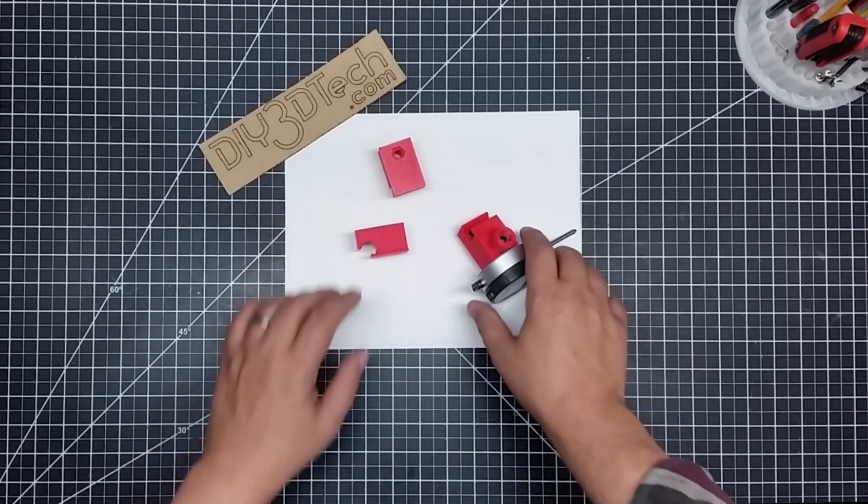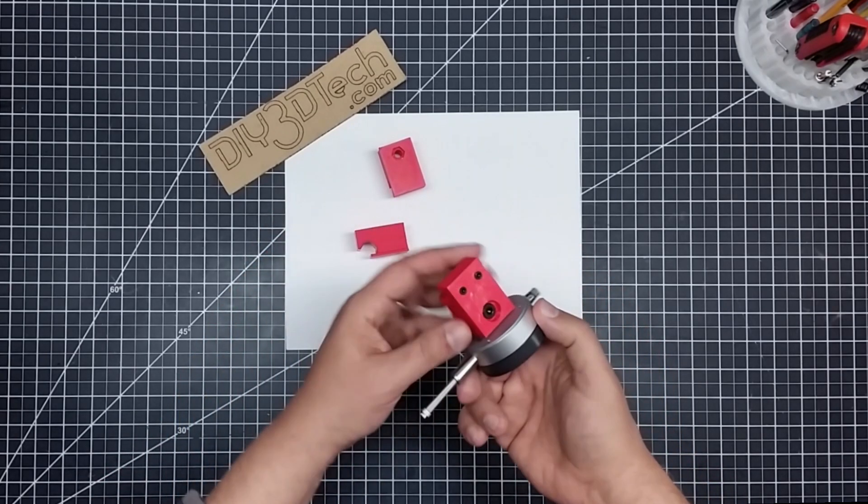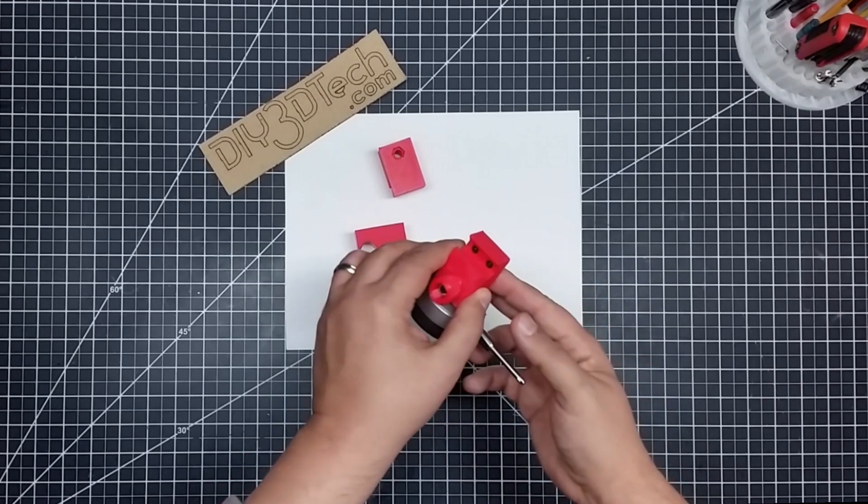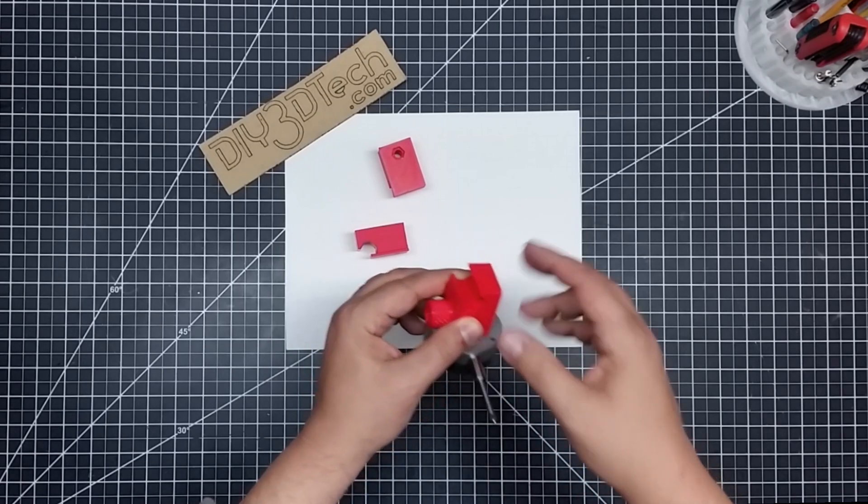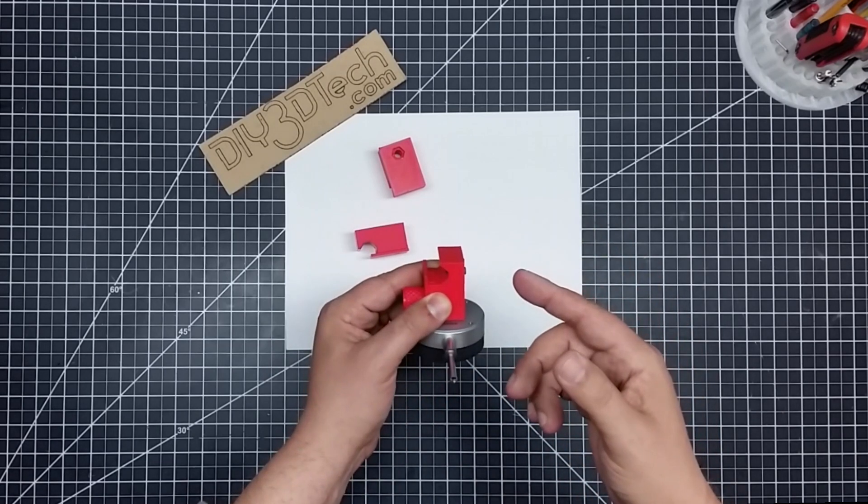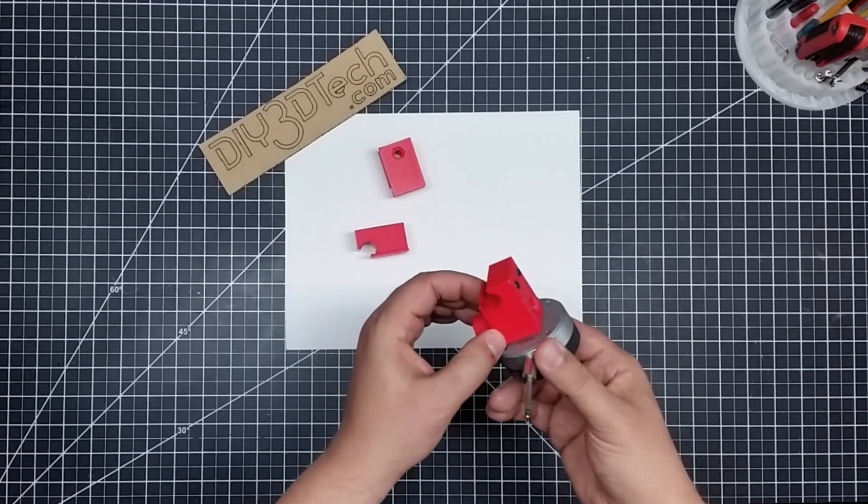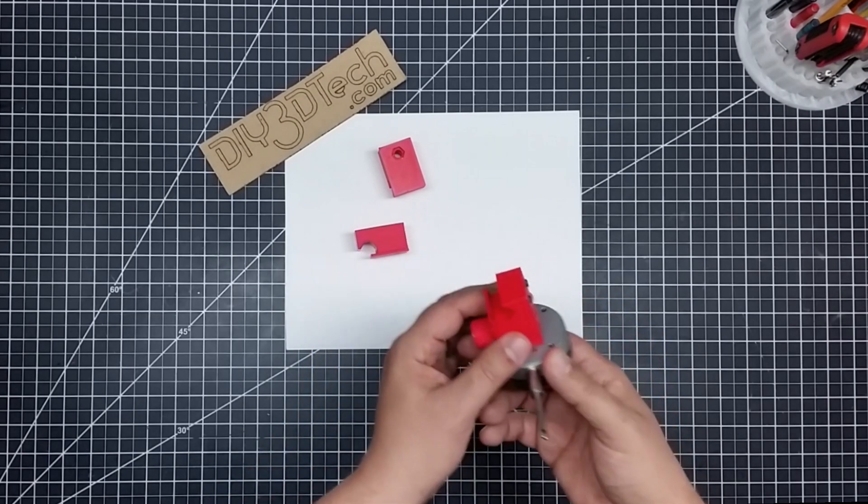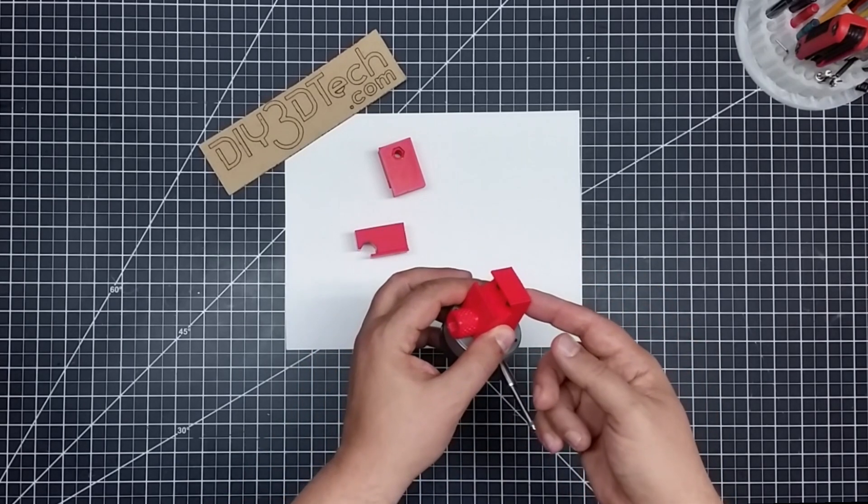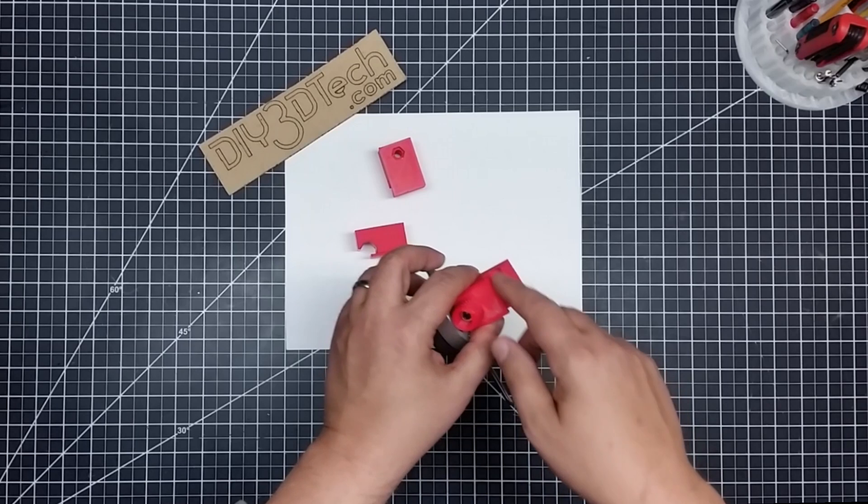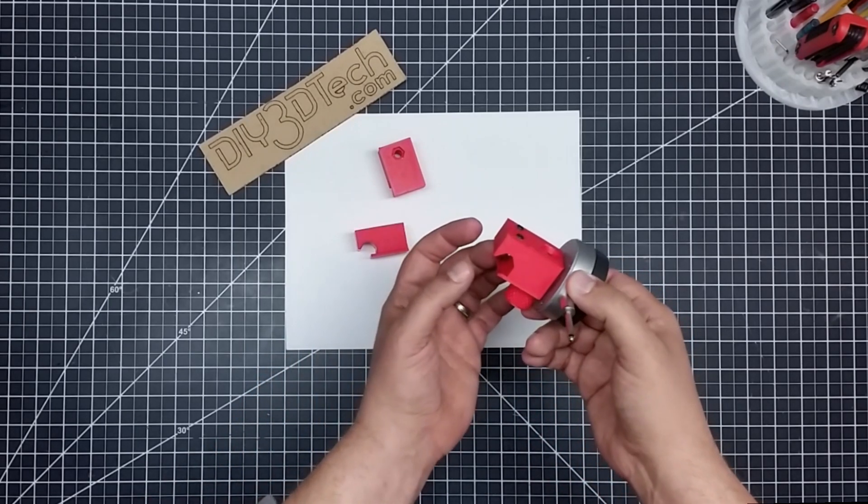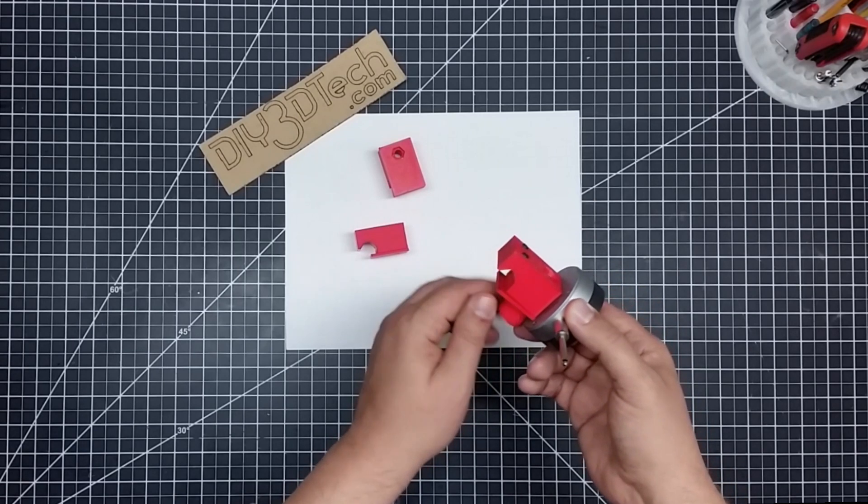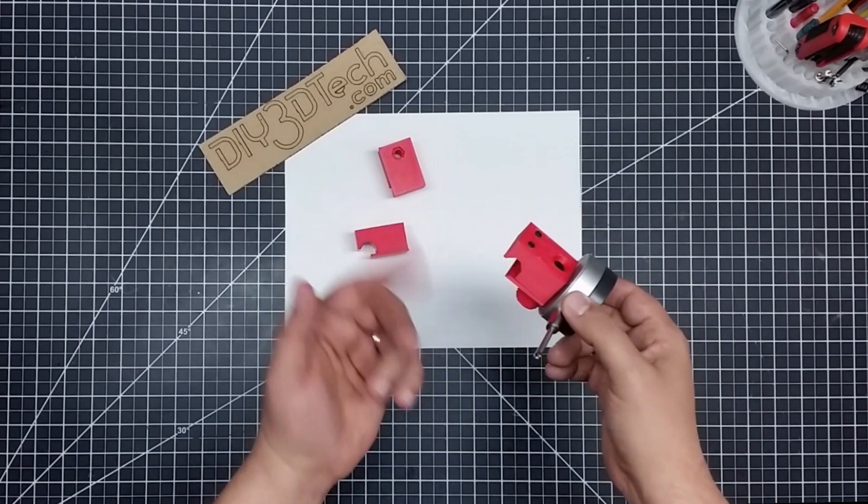So what I ended up doing, and this kind of served double duty, is I put in two M3s with nuts here on the back. Now this probably is enough plastic because I printed these with one millimeter wall. So this is a pretty solid piece of plastic. I could have probably tapped this, but I did also put the nuts inside here. So what this actually does is cinches down on the bed and pulls up. I can loosen this up to place it on, and then I can cinch it down with these.